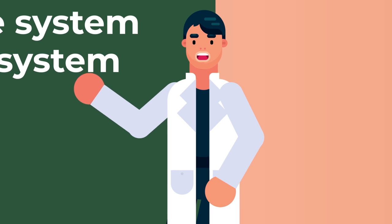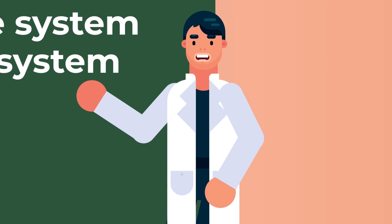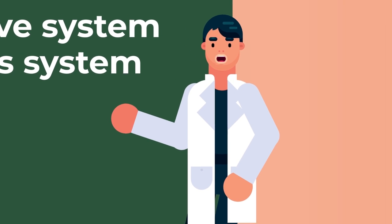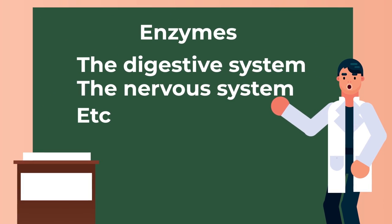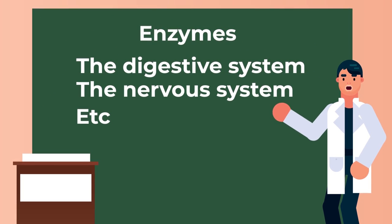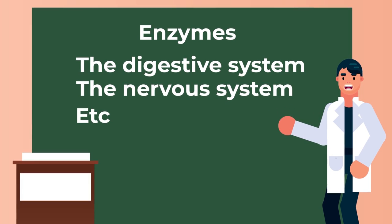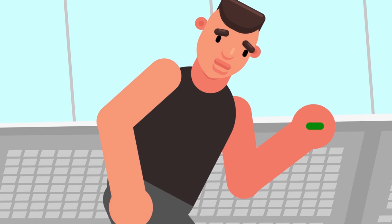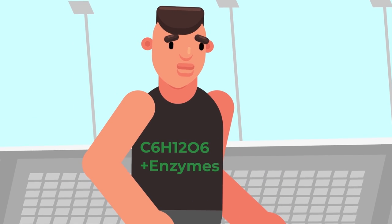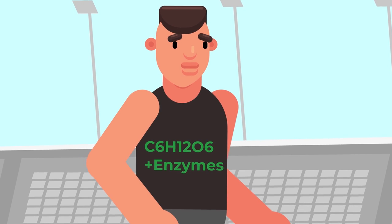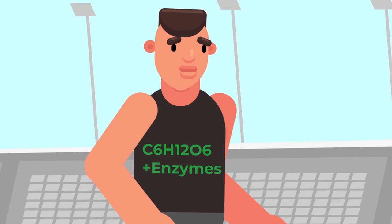Enzymes are biological catalysts that speed up chemical reactions in cells. Enzymes play a huge part in the day-to-day running of the human body and are vital for the proper functioning of all human systems. For example, the digestive system, the nervous system, etc. Some enzymes help break large molecules such as glucose so the body can use them as fuel. Other enzymes help bind two molecules together to produce a new molecule. Enzymes are highly selective catalysts, meaning that each enzyme only speeds up a specific reaction.